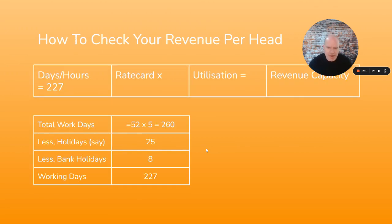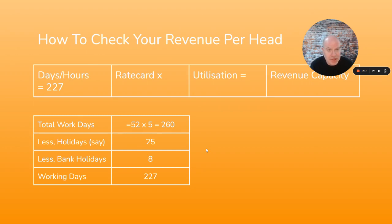One wrinkle is working out the days. To get the hours, you can just multiply by 7.5. We start with total workdays: 52 weeks in the year, five days a week — that's 260 — and you change that for individuals who work part-time. Less holidays and bank holidays in the UK gets you to 227 working days in the year.